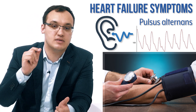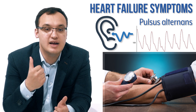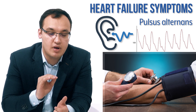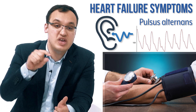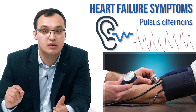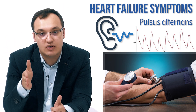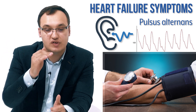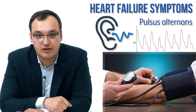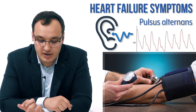Then we reduce the pressure a little more and start to hear a weak sound also — so it's alternating strong and weak: strong, weak, strong, weak. The strong sounds and weak sounds are alternating, and this is called pulsus alternans. It is very typically seen in heart failure patients.